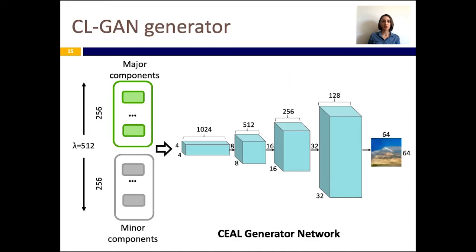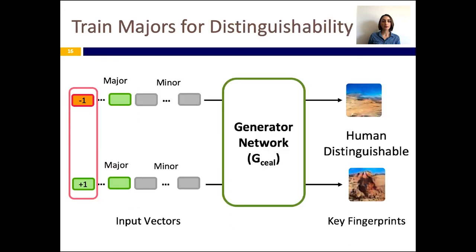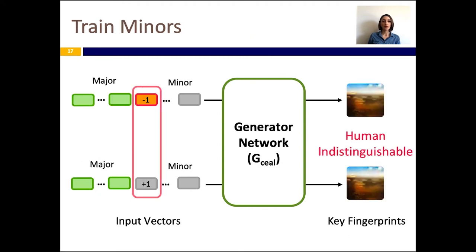With this in mind, here is our SEAL generator network. The input to this network has a length of 512, and we set half of these components as major and the remaining half as minor components. To train the SEAL generator, we train the network for more than 2 million iterations. In each training iteration, we generate different sets of input pairs and use them sequentially to train the network. In the first step, we use input vector pairs that are different only in one major component. The generator generates corresponding images, which we then pass through HPD and the realism discriminator to determine if they look distinguishable and realistic, and provide that feedback to the generator. We also train minor components to have an indistinguishable impact on generated images by generating input vectors that differ in a single minor component, and defining the generator loss to produce image pairs that look identical for such input vectors.